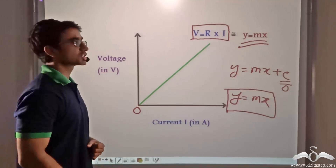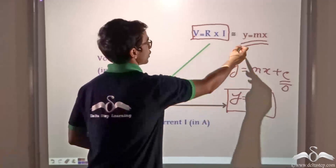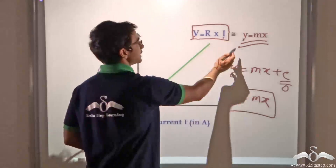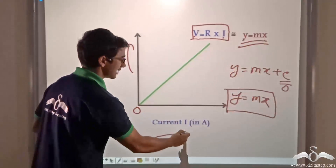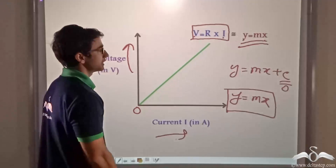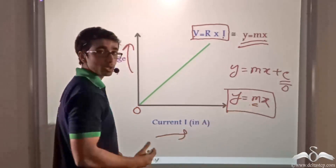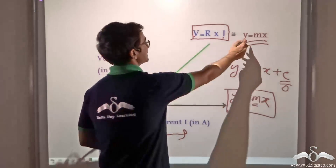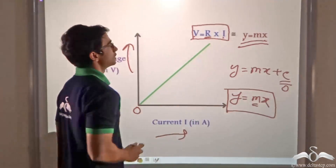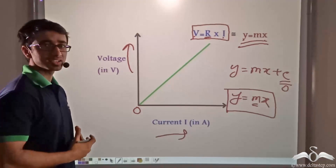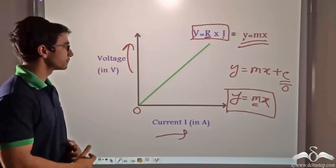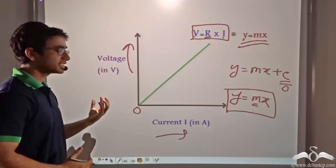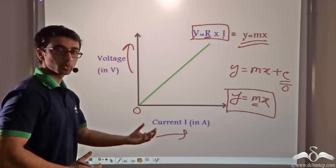If you observe closely, V has been plotted on the y-axis and I on the x-axis. In the straight line equation y equals mx, m is the slope, and here that slope is nothing but R. So in other words, R is the slope of the straight line that we get when we plot voltage against current.